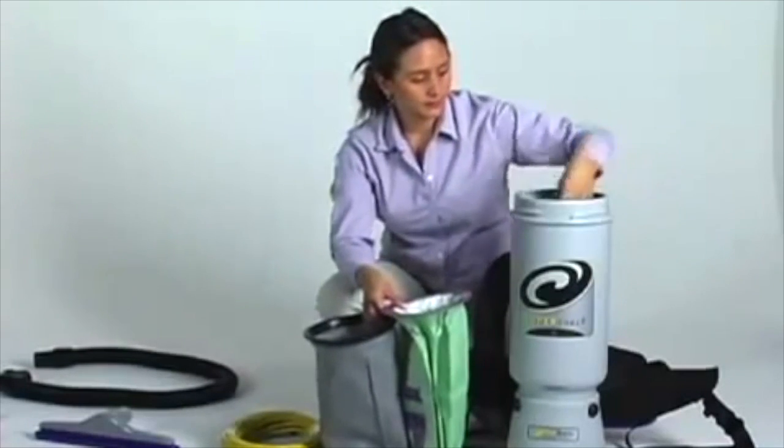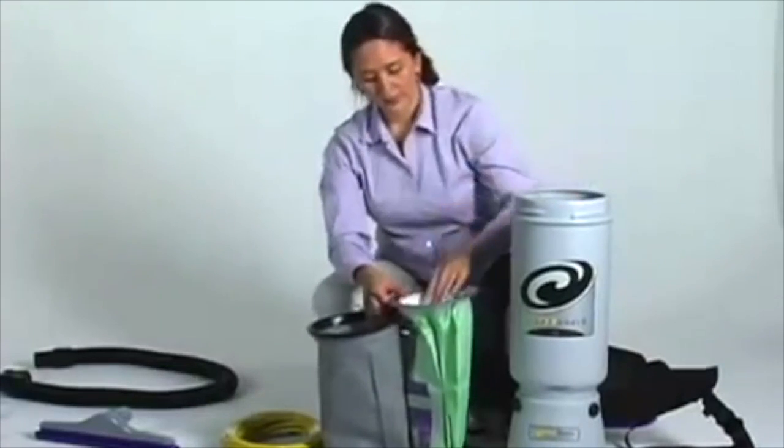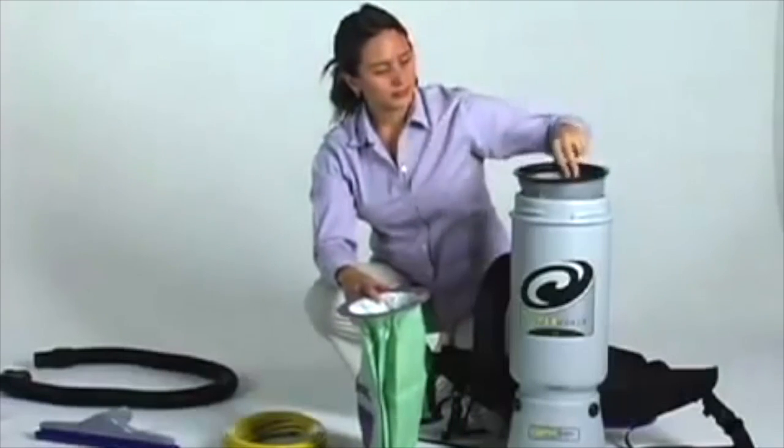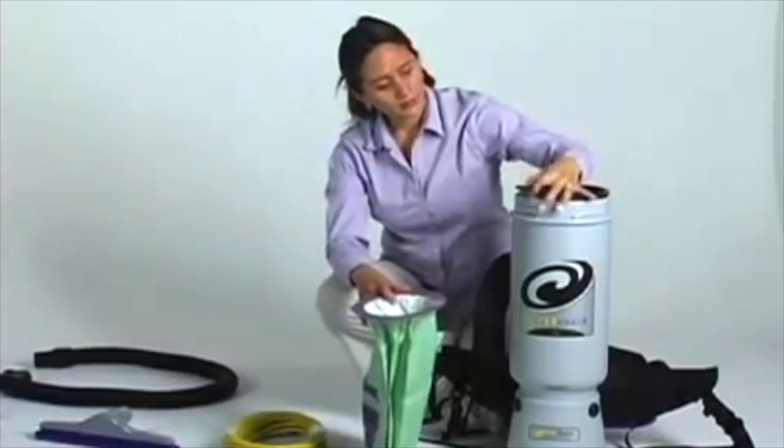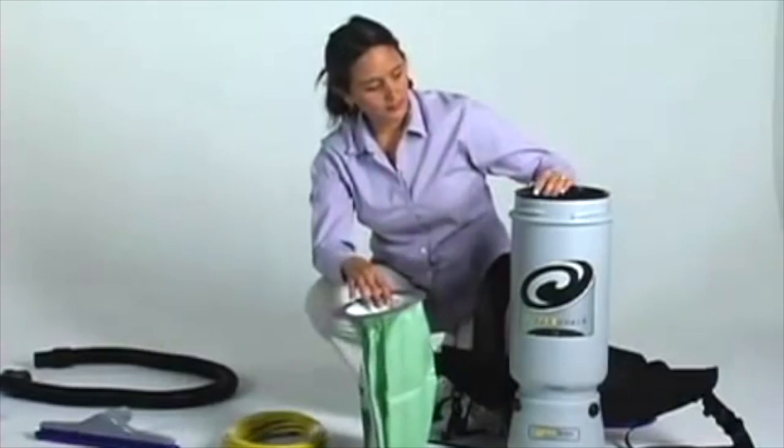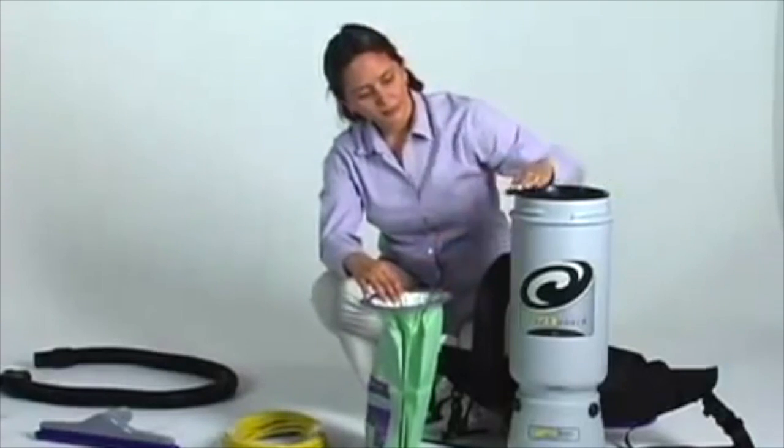First push the dome filter back onto the top of the vacuum motor. Next insert the microcloth filter, making sure the lip of the filter completely covers the rim of the vacuum. Remember to never use an intercept microfilter without the microcloth filter, as the cloth filter's rubber gasket provides the seal for the vacuum.